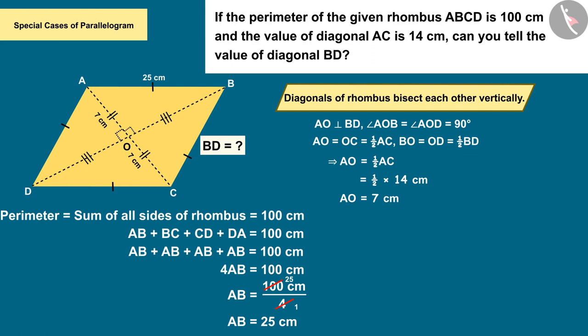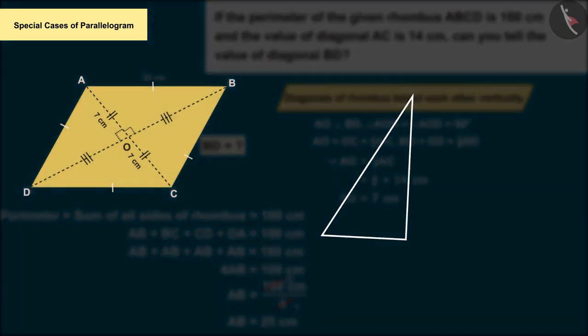Now can you tell what we need to do to find the measurement of diagonal BD? We can see that triangle AOB is a right angle triangle.